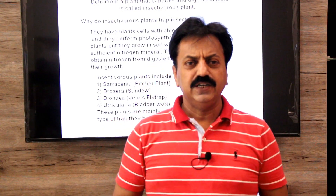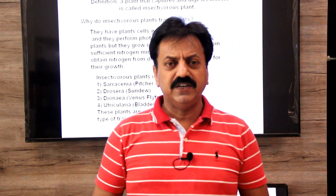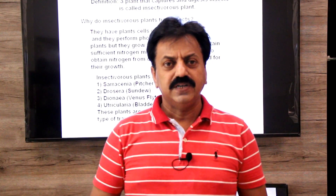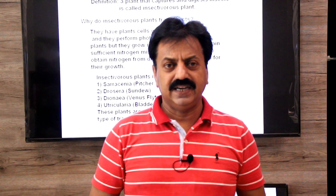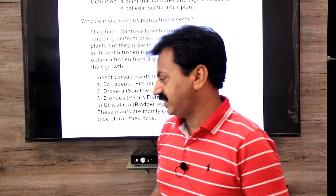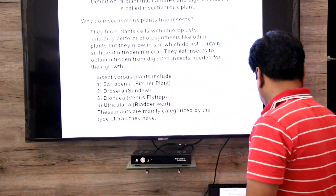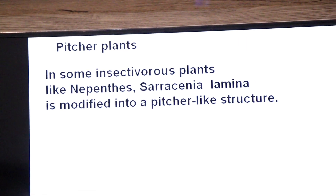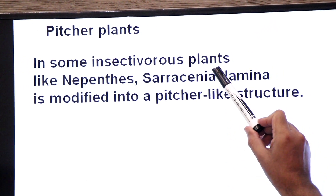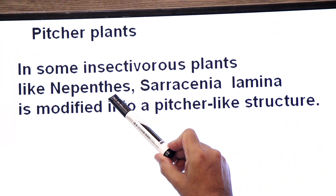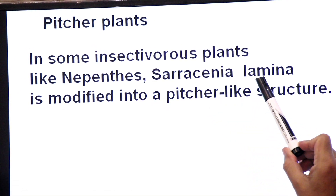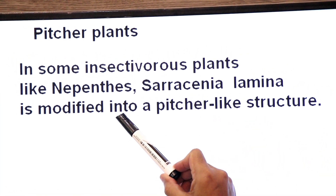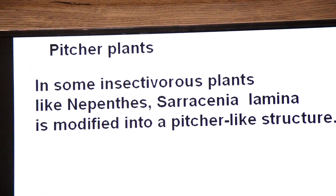For example, the pitcher plant's leaves are modified into a pitcher-shaped structure, which is why it is named the pitcher plant. In some insectivorous plants like Nepenthes and Sarracenia, the lamina — the leaf blade — is modified into a pitcher-like structure.